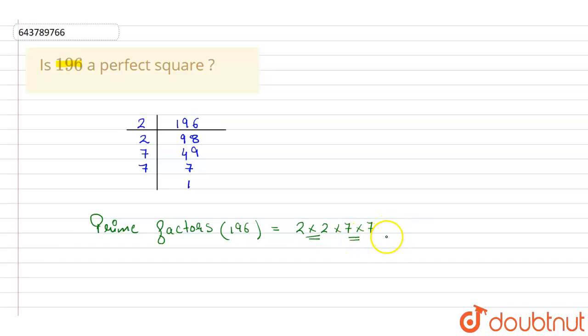Therefore, if no prime number is left unpaired, then 196 is a perfect square.